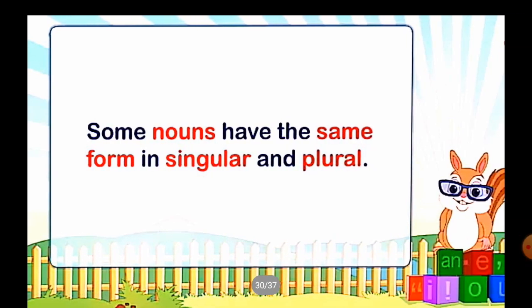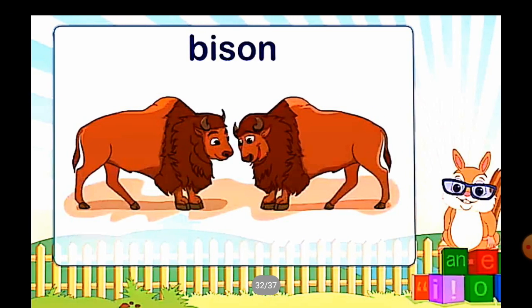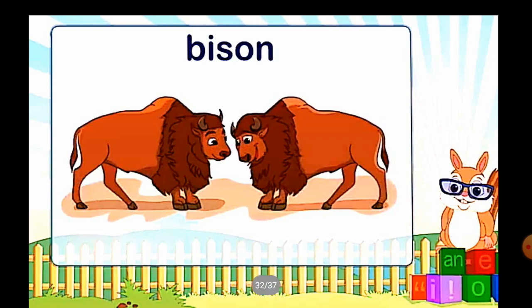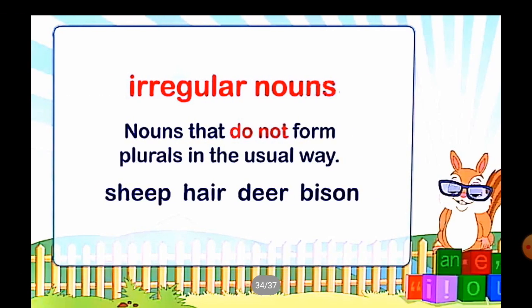Some nouns have the same form in singular and plural. For example: 'Hair' — whether singular or plural, we say 'hair'. 'Bison' — both singular and plural is 'bison'. Such nouns that do not form plurals in the usual way — like sheep, hare, deer, bison — are called irregular nouns.